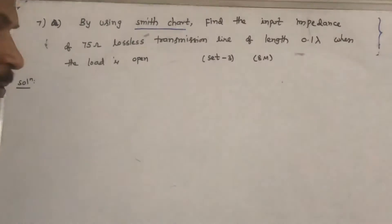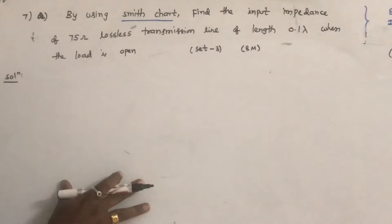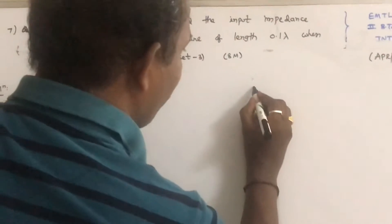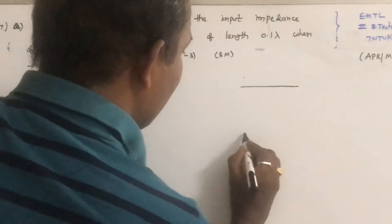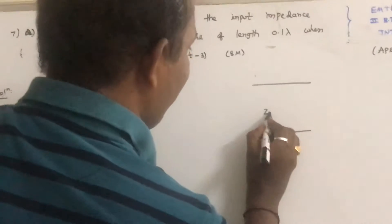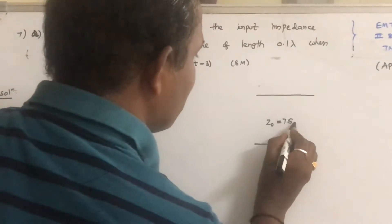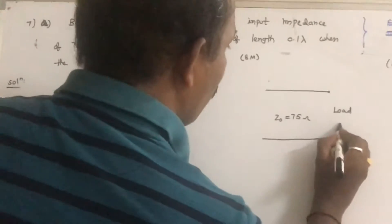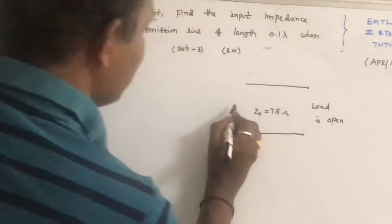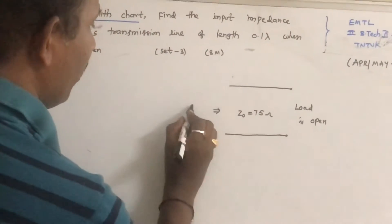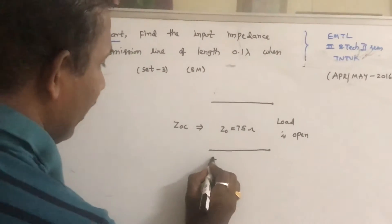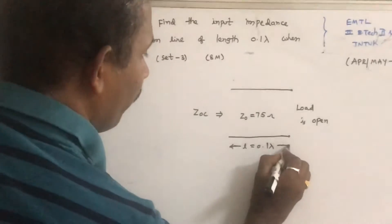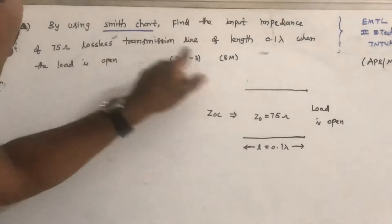It is a very simple problem. First, we will see how to solve theoretically and then check the same answer with the Smith chart. The given information: the transmission line has a characteristic impedance of 75 ohms, the load is open circuit, the length of the line is 0.1 lambda, and it is a lossless line.